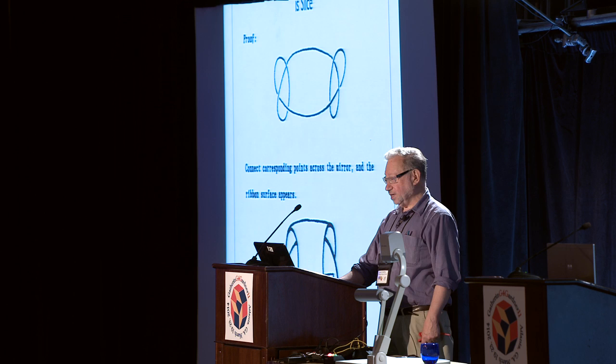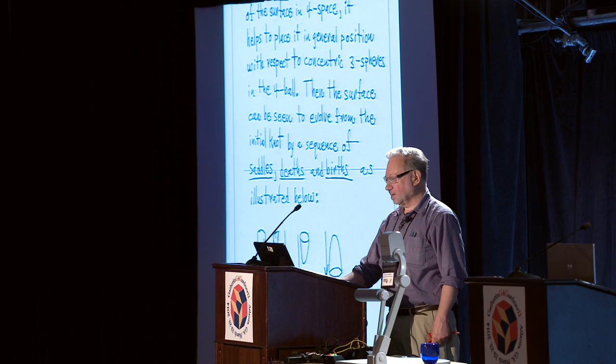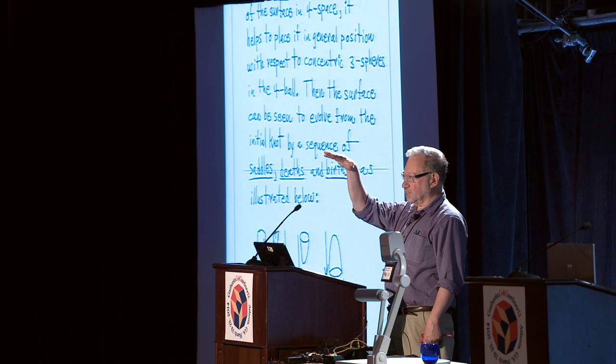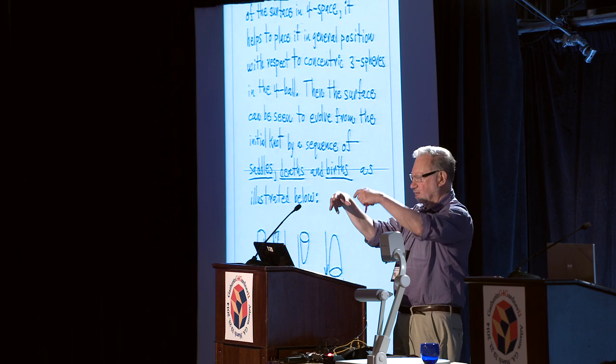In any case, a knot can bound a disk in four-space — particularly a knot connected up with its mirror image always bounds a disk in four-space. Another way to think about these surfaces in four-space is to think of taking the knot in three-space and watching it move in time, going through saddle points, deaths, and births.